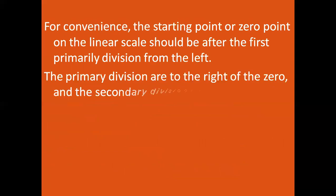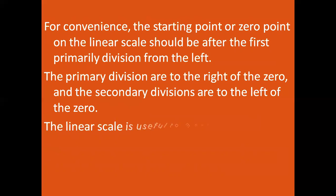For convenience, the starting point or zero point on the linear scale should be after the first primary division from the left. The primary divisions are to the right of the zero and the secondary divisions are to the left of the zero.